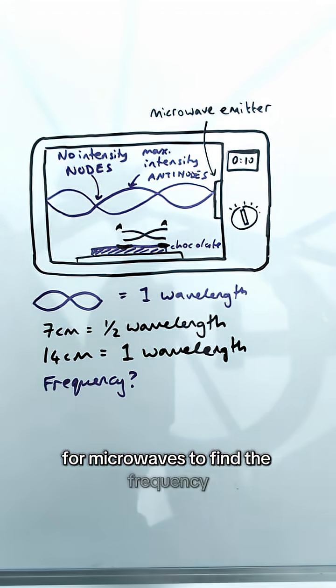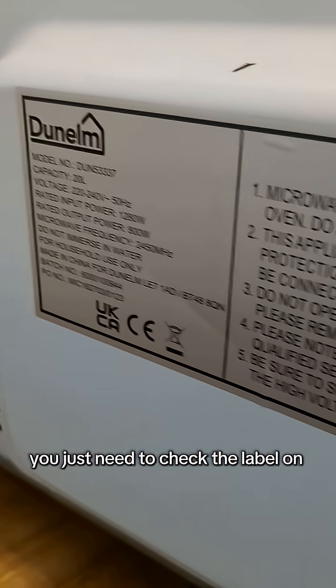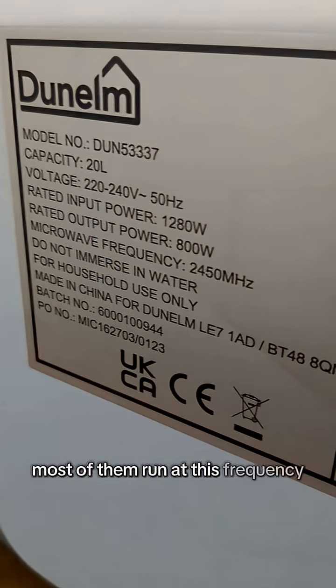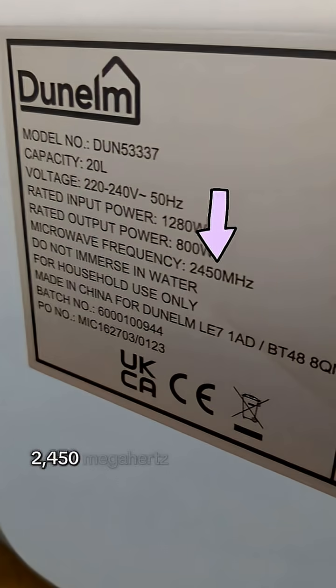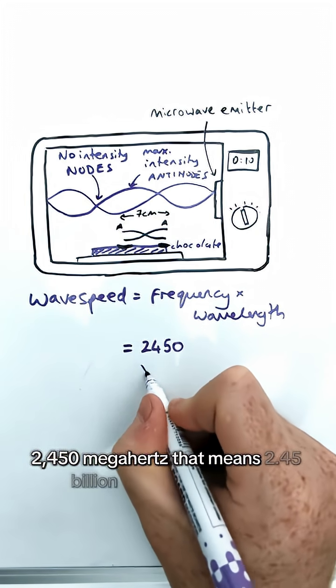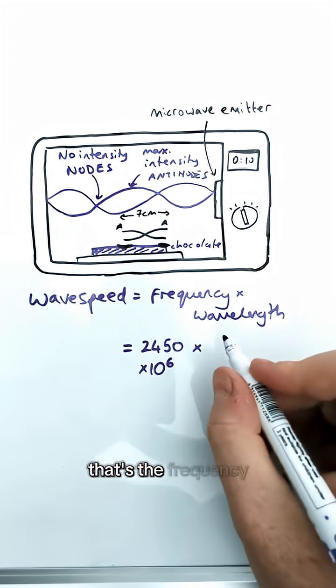For microwaves, to find the frequency, you just need to check the label on the back of the microwave. Most of them run at this frequency, 2,450 megahertz. That means 2.45 billion waves per second. That's the frequency.